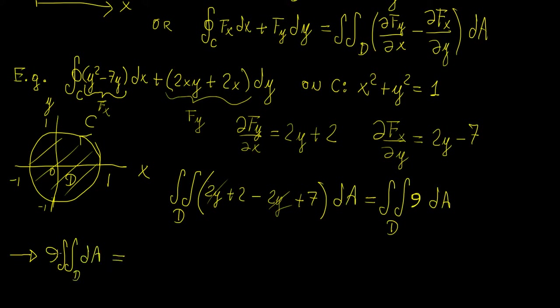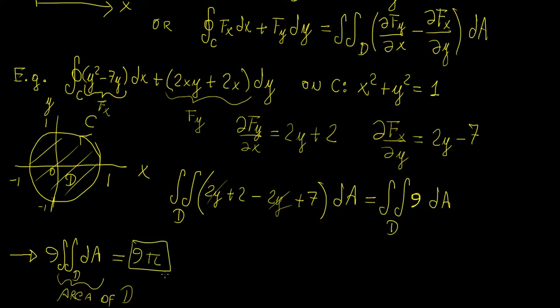Can you guess what the value of this is going to be, without putting in any limits or substitutions? It turns out that this expression is just the area of the domain D, because from multivariable calculus the area of some domain D is represented by that double integral. The area of a circle is π times the radius squared, and the radius is 1, which means we're going to have 9 times π. So this is our final answer.